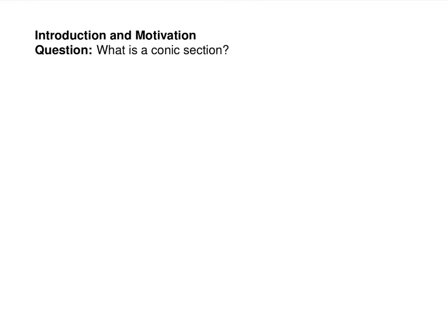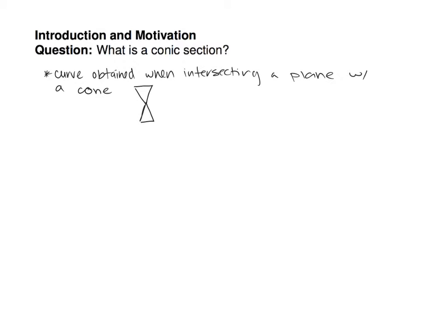What is a conic section? Well, geometrically, a conic section is a curve that's obtained when you intersect a plane with a cone — a cone that has a top and a bottom, some kind of hourglass figure. If you look on Wikipedia or Google a conic section, you'll see a picture of what happens when you intersect that cone this way or this way or like this.